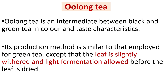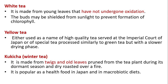Oolong tea is intermediate between black and green tea in color and taste. Its production method is similar to that for green tea, except the leaf is slightly withered with a light fermentation allowed before the leaf is dried. White tea is made from young leaves that have not undergone oxidation; the buds may be shielded from sunlight to prevent chlorophyll formation. Yellow tea is either a high-quality tea served at the imperial court or a special tea processed similarly to green tea but with a slower drying phase.